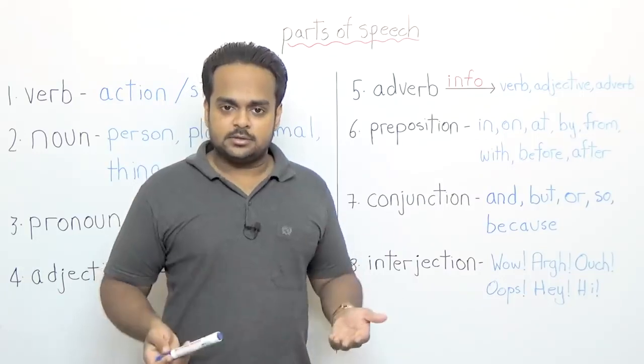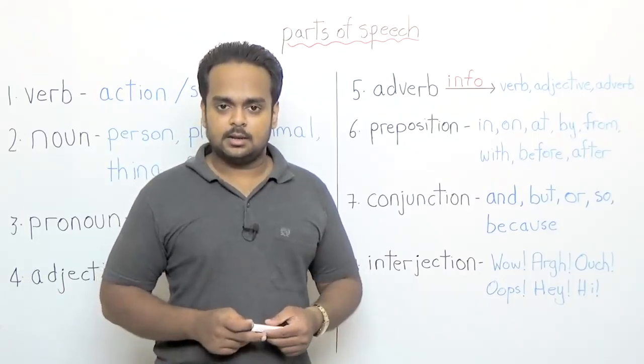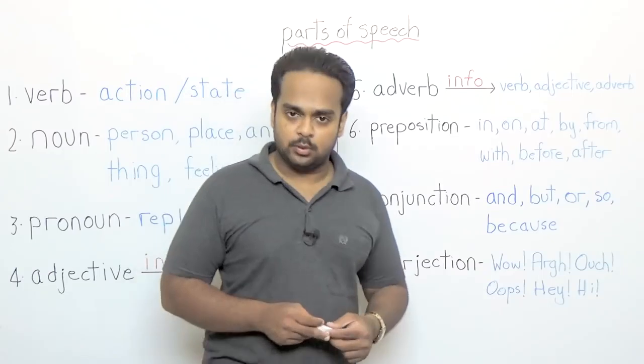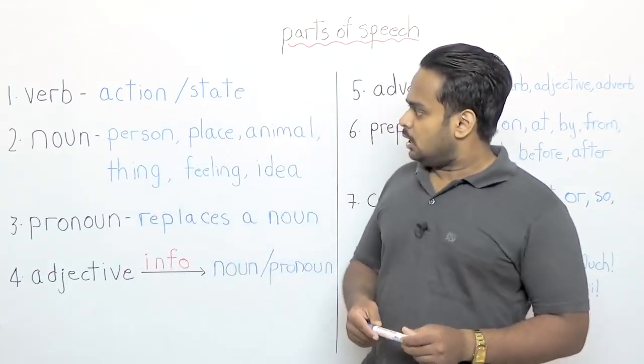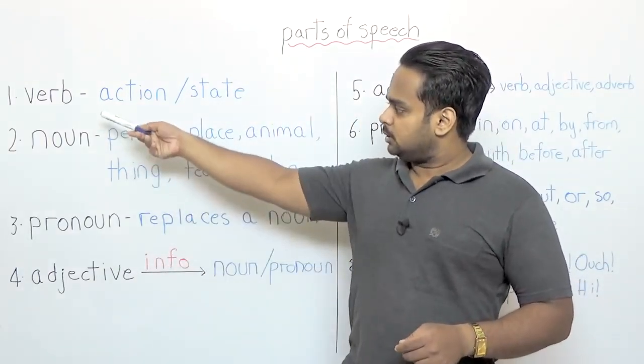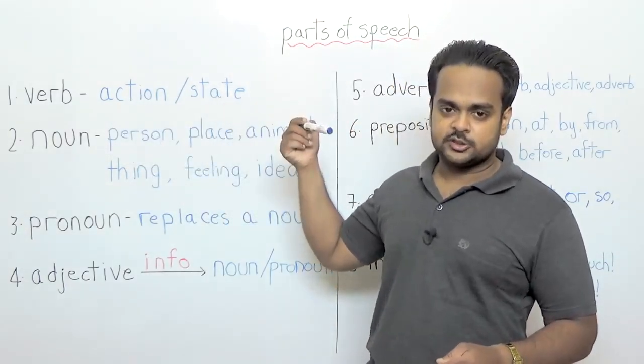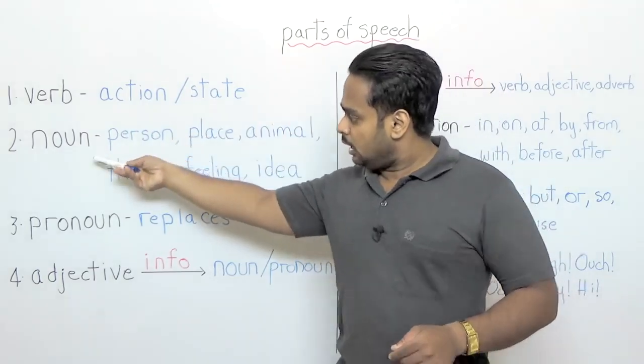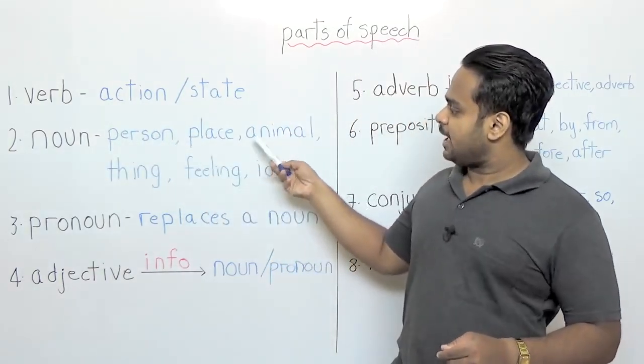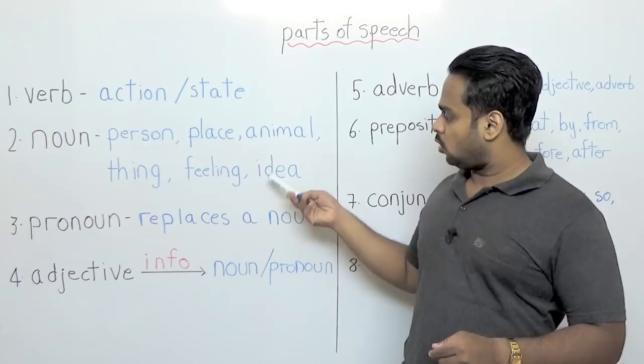So those are the eight parts of speech. Let's do a quick recap of what we've learned today. We started with the verb. The verb is a word that shows an action or a state. State means situation. A noun is a person, place, animal, thing, feeling, or idea.